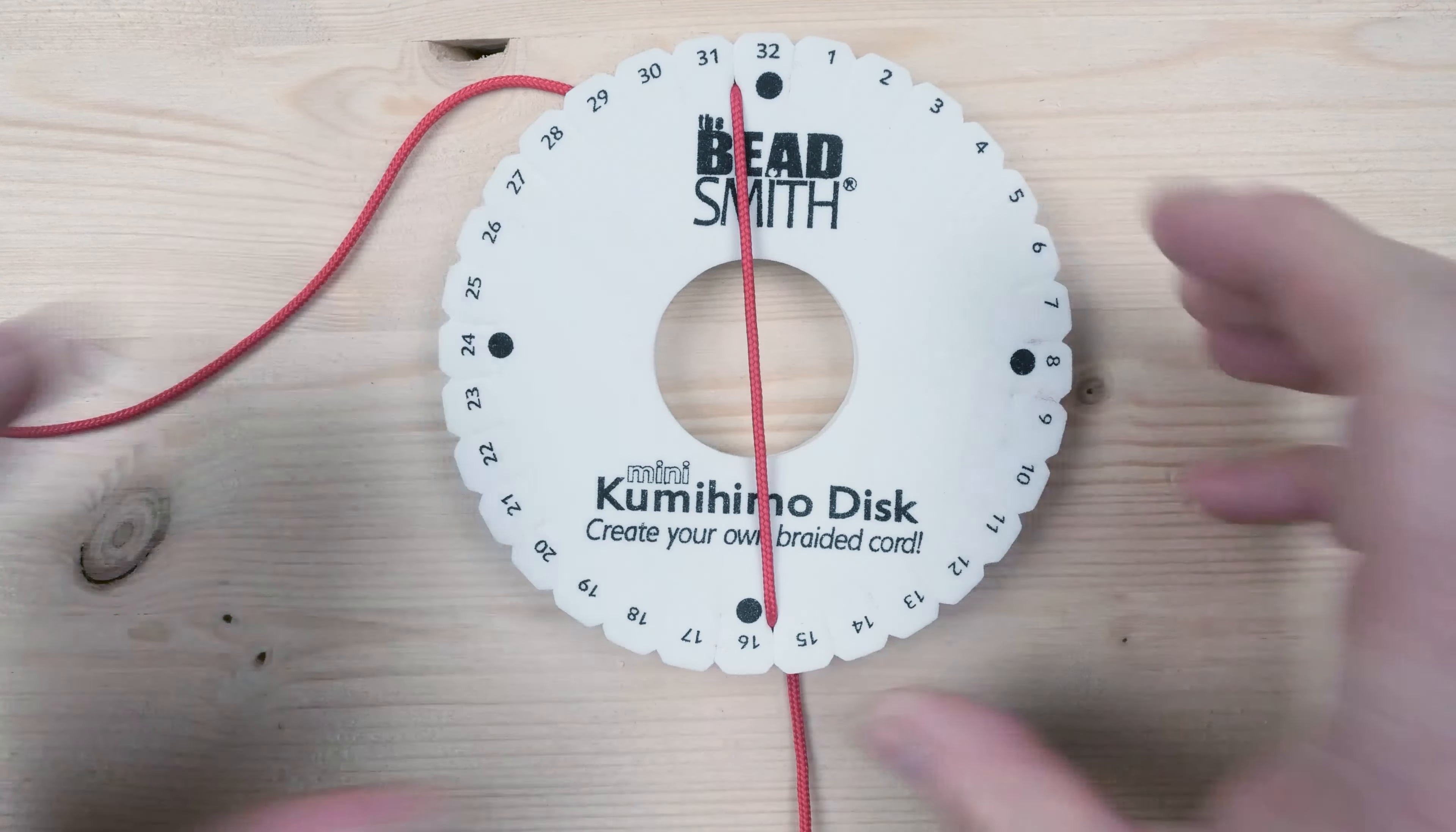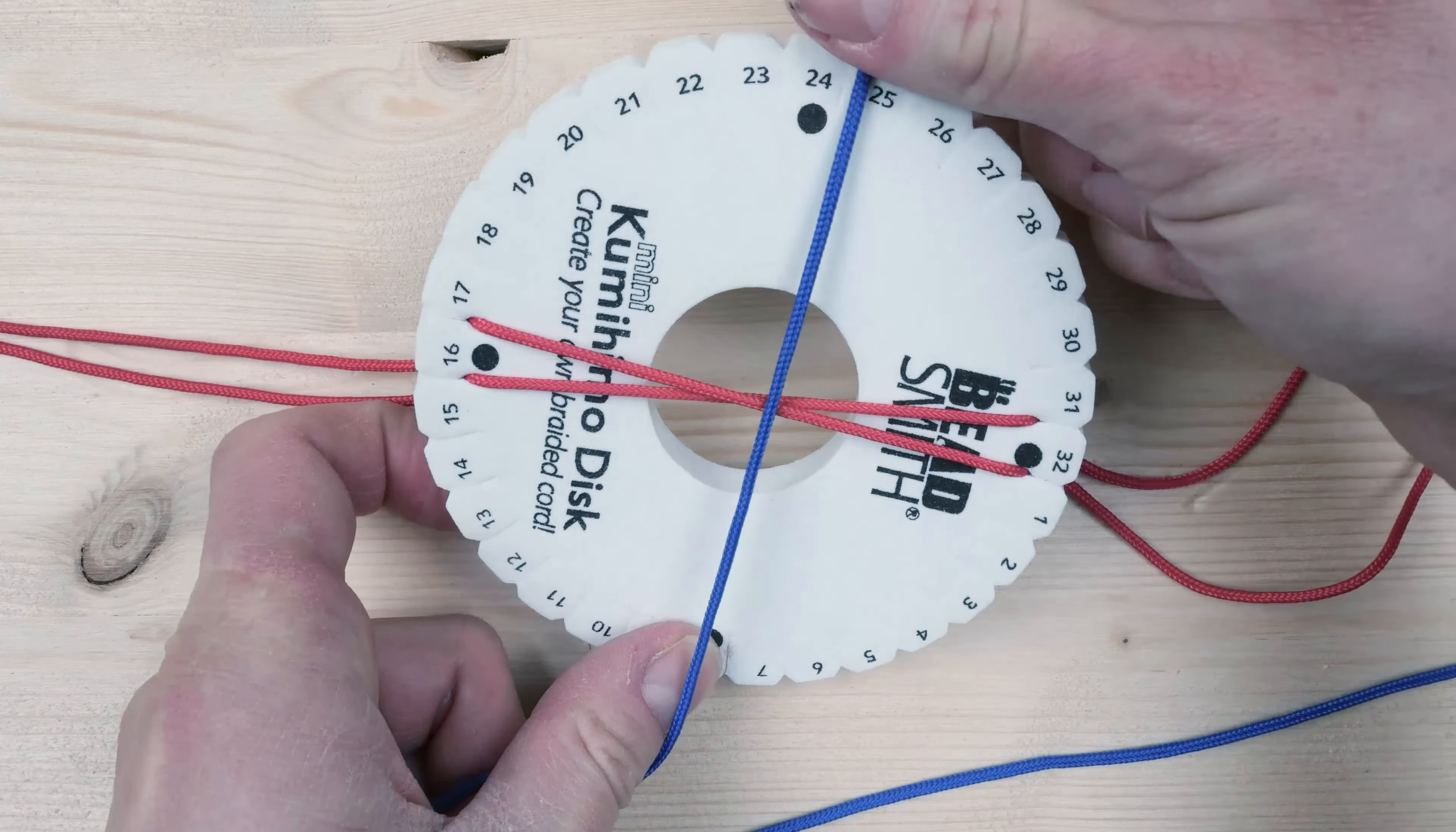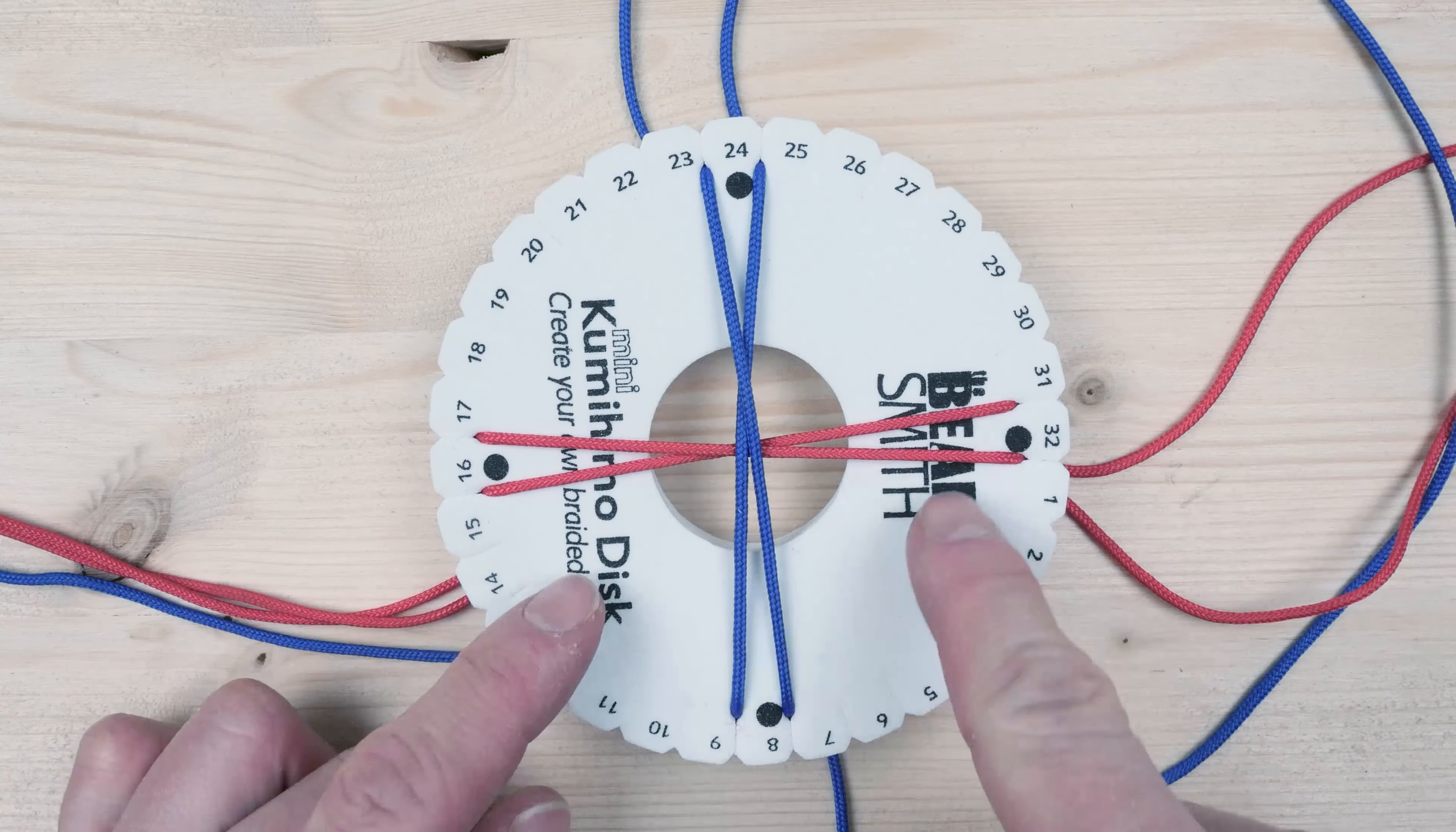Then you take another cord, you set it up again diagonally, from the top towards the bottom. This would be the most basic setup for a round kumihimo braid.